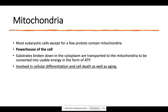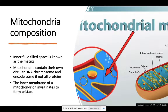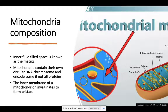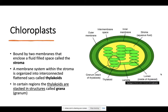Mitochondria have two different structures: the matrix and the cristae. The matrix is the inner fluid-filled space, whereas the cristae is the inner membrane of the mitochondria that invaginates — you can see the invagination here. The mitochondrial matrix is comparable to the stroma of the chloroplast; both of these are fluid-filled spaces.